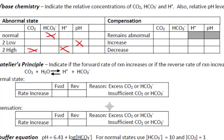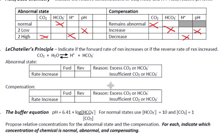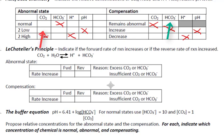The compensating system is the metabolic, therefore the bicarbonate will increase. The CO2 remains abnormal. If the base increases, the hydronium ion will decrease, thereby bringing the pH back up to normal. Note that the compensating system will follow the concentration trend of the abnormal system — the CO2 increased, so the bicarbonate also needed to increase to offset the excess carbon dioxide. On the second page, you will see the CO2 decreasing, so the bicarbonate must decrease. A balance between the CO2 and the bicarbonate must always be maintained.